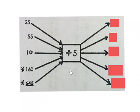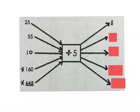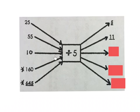In this flow diagram, the rule is I must divide by 5. So I must start with 25, divide it by 5 and get my answer, which is 5. Then I take 55, the rule is I divide by 5 and I get my answer, 11. Then I take 10, divide it by 5 and my answer is 2.